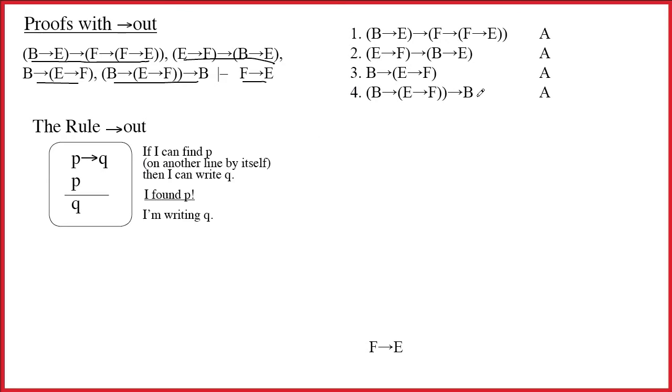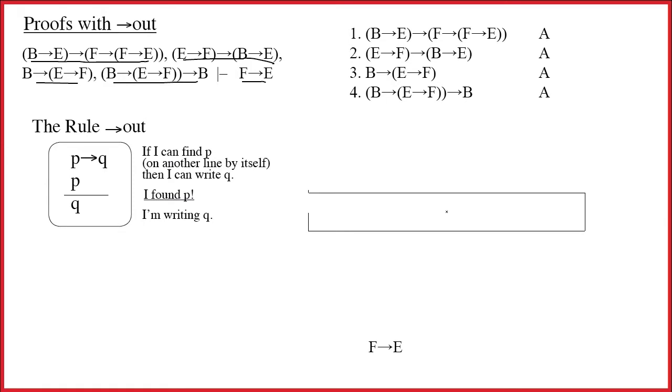Now obviously I've already set up the argument over here in the standard way. We take all the premises, we number them, we stack them on top of each other, and then we have another column over here. What's this column called? It's the justification column. And every premise is justified merely because it's an assumption.